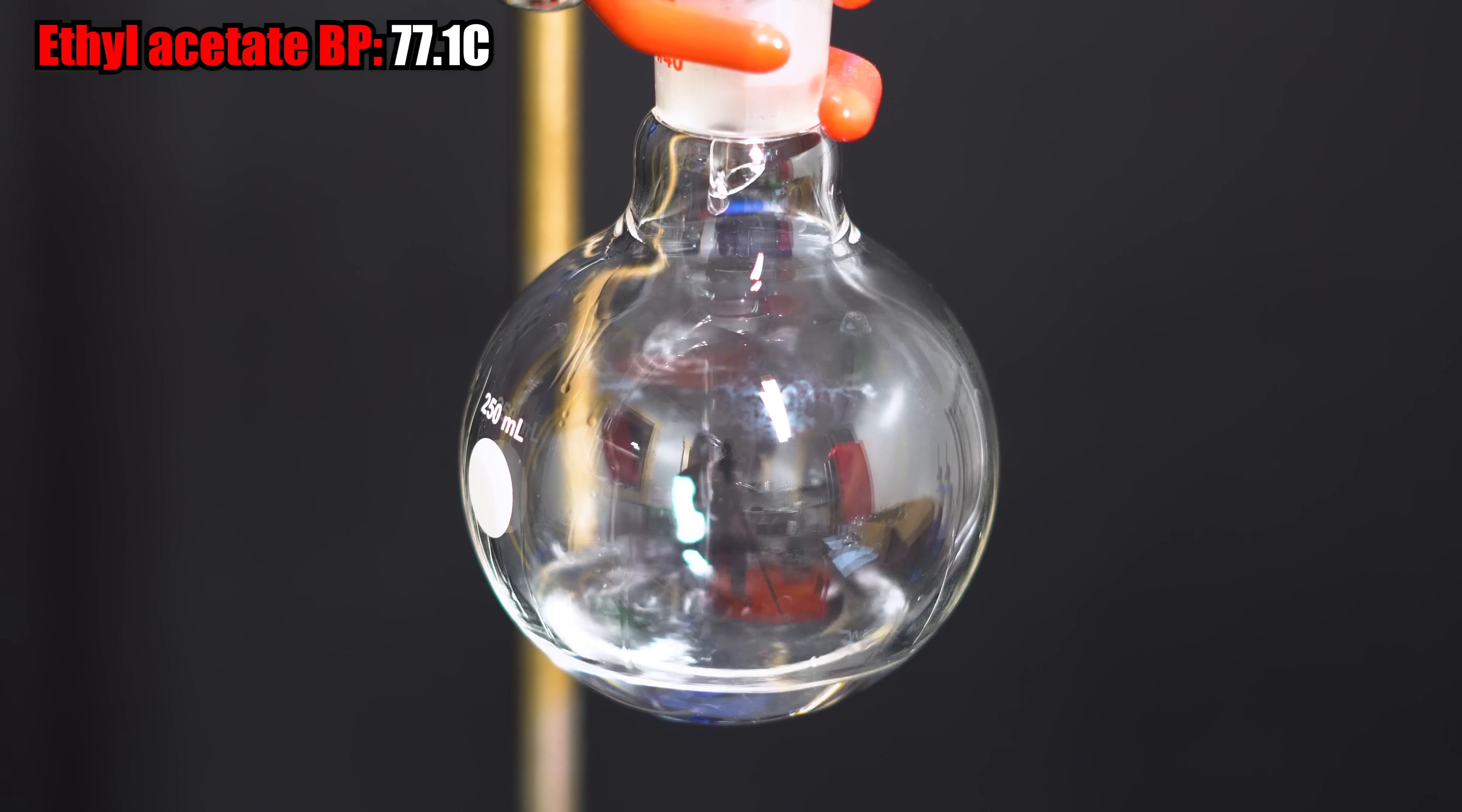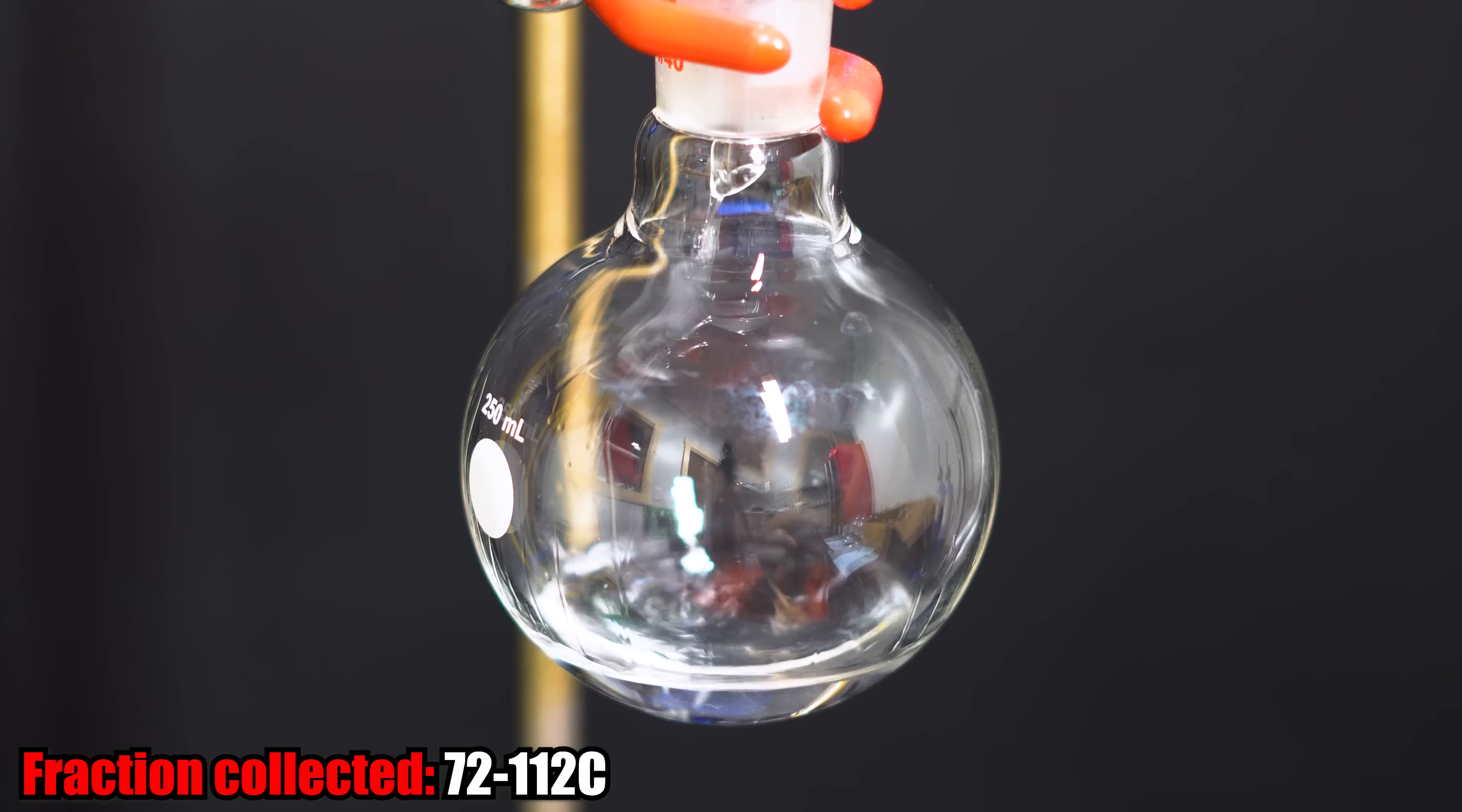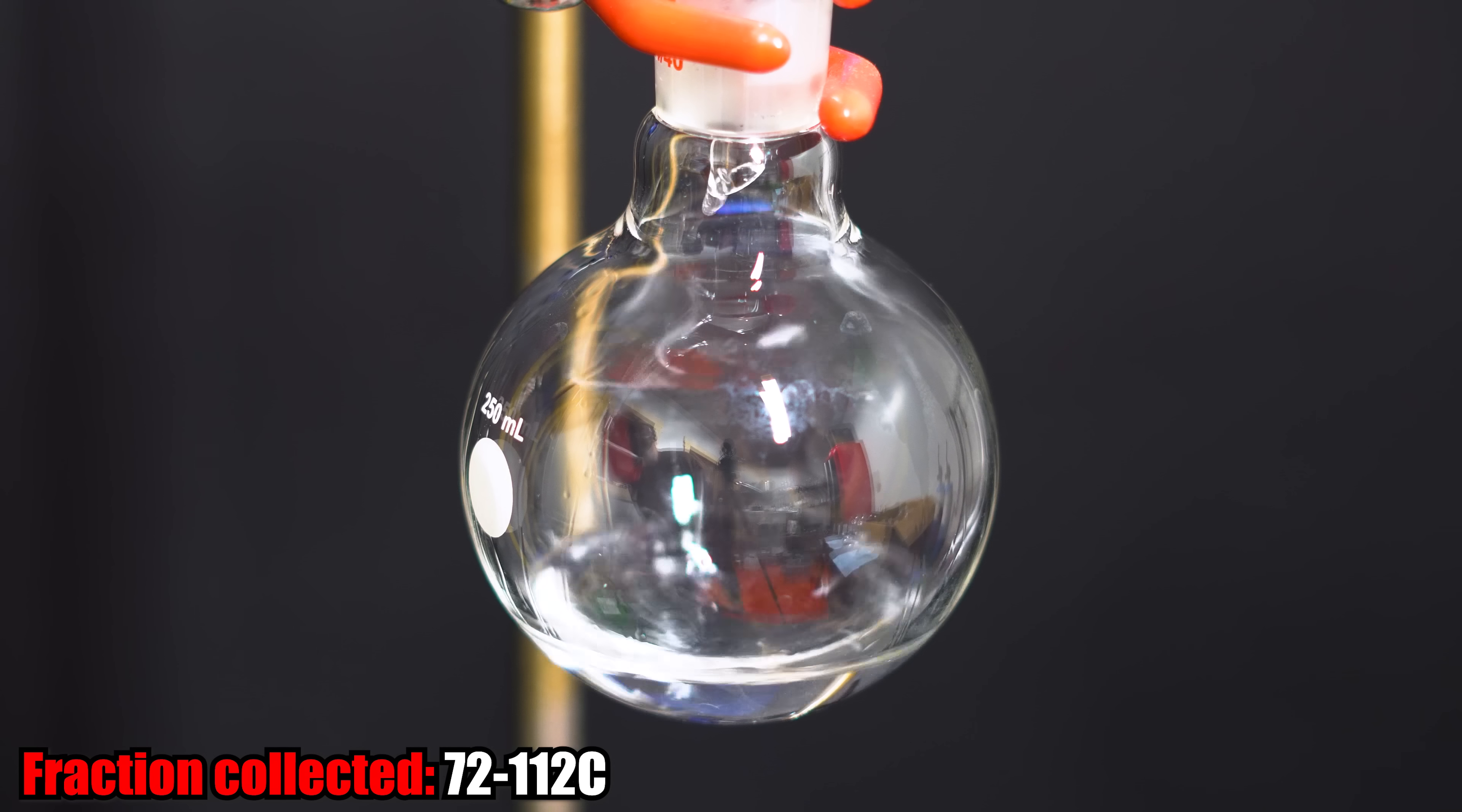I decided to collect everything up to about 70-72 degrees Celsius, and then switch the flask out so we can collect the ethyl acetate. Though, likely, we're going to have a mixture of ethyl formate and ethyl acetate. I switched the flask out just so I could have a pretty pure product of the ethyl formate, and I really don't care about this middle fraction. I'm just going to pour this back into the bottle since it's going to be a mixture of things, and I'll just fractionally distill again.